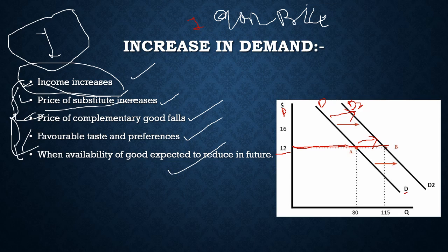Similarly for decrease in demand, there will be a leftward shift of the demand curve and price will remain constant. In decrease in demand, either income will decrease, or price of substitute good will decrease, or price of complementary good will increase, or there will be unfavorable taste and preference, or the consumer expects that price will increase in the near future.